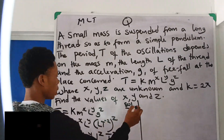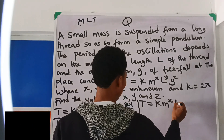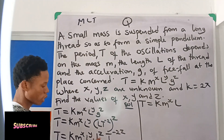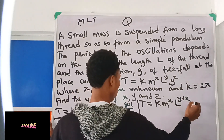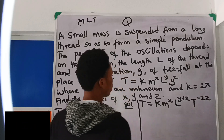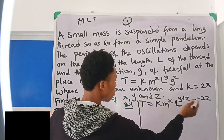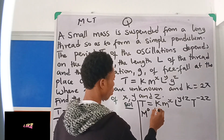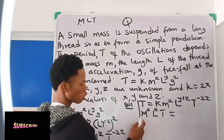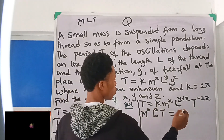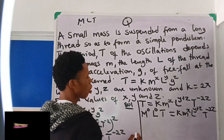So we have T = K · M^X · L^(Y+Z) · T^(−2Z). Now compare coefficients on both sides. The left side T can be written as M⁰ · L⁰ · T¹. We now compare each fundamental quantity on both sides to set up our equations.